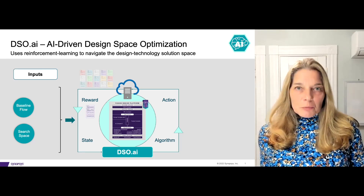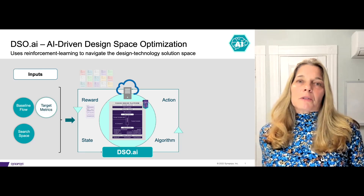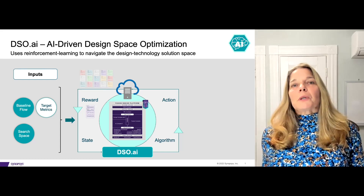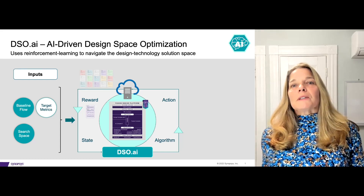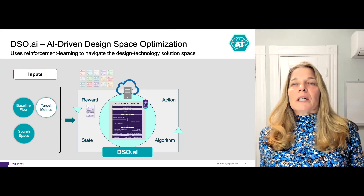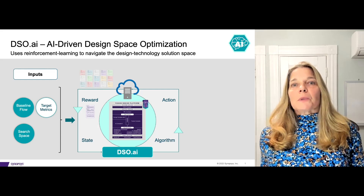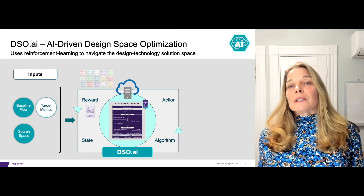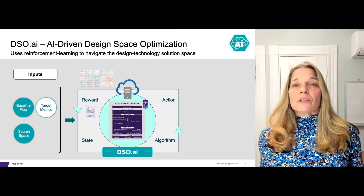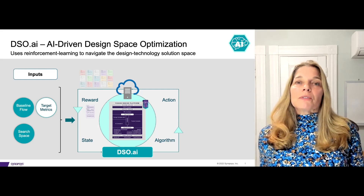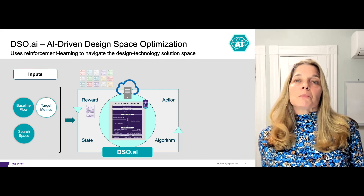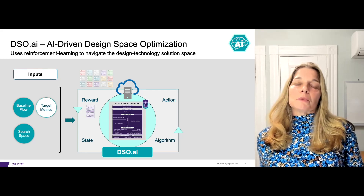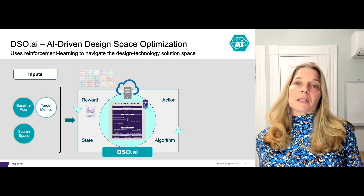The third input are target metrics. These are measurable goals that you want DSO AI to optimize for. They could be standard ones like timing, power, area, congestion, or you can define custom TICL metrics that DSO optimizes directly.